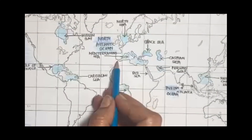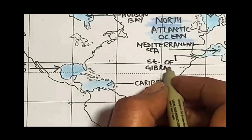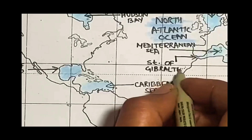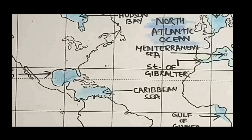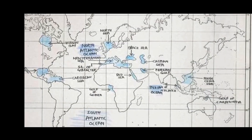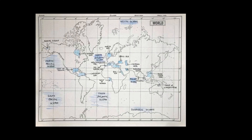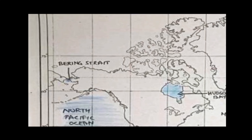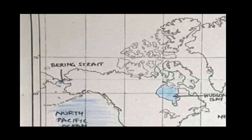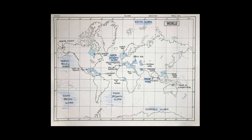Can you see this opening point? This is known as the Strait of Gibraltar. And the last one, which is very important, is your Bering Strait. Come towards the western part — this portion of North America and this portion of Asia. Can you see a gap over there? Put one dot, and that gap is your Bering Strait.